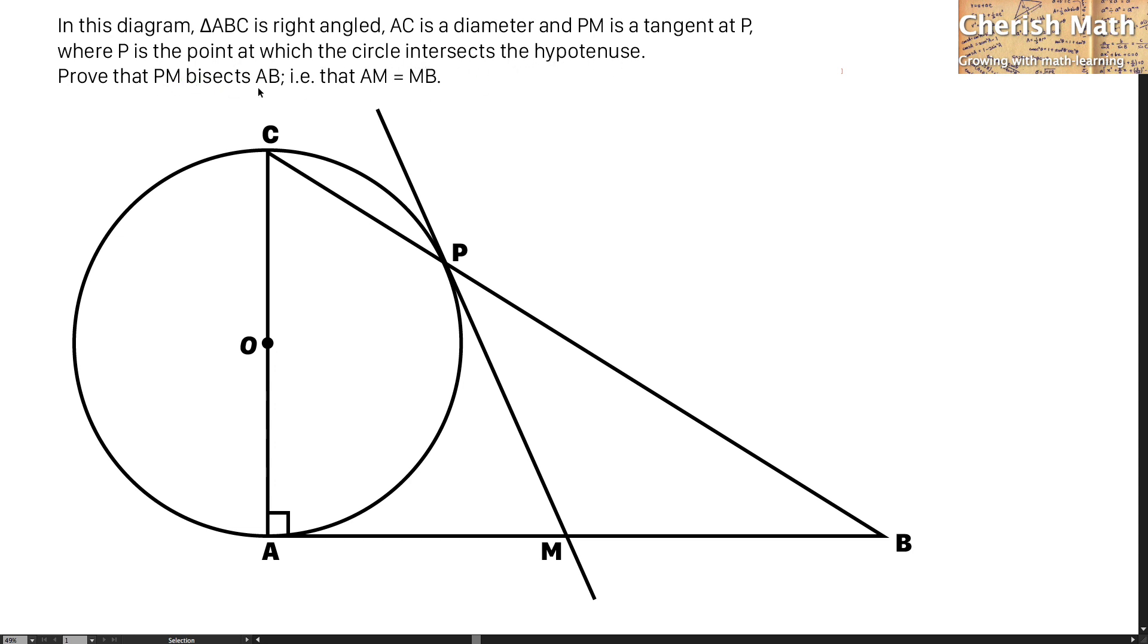Prove that PM bisects AB, that AM equal MB.